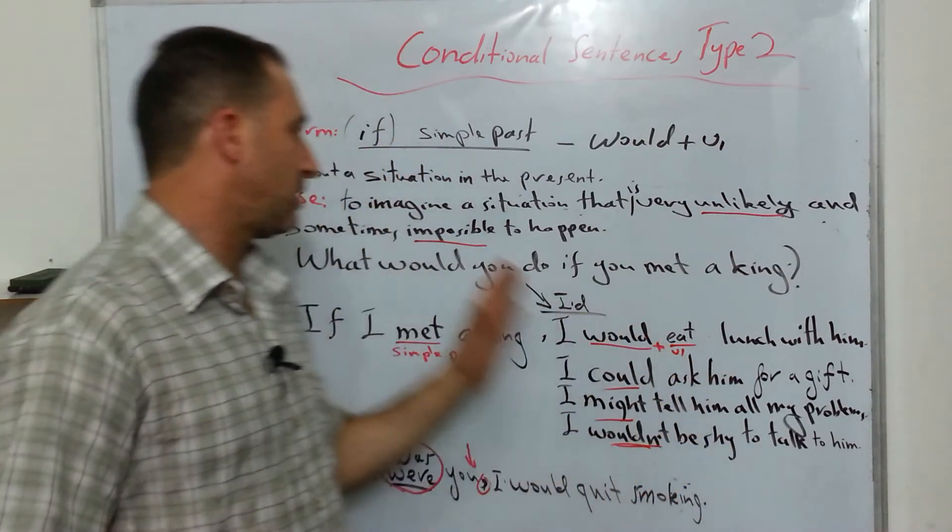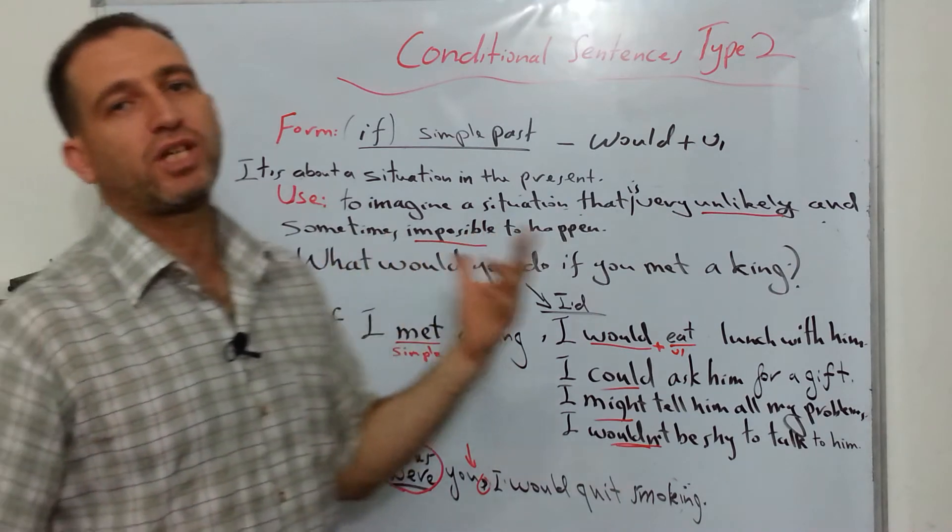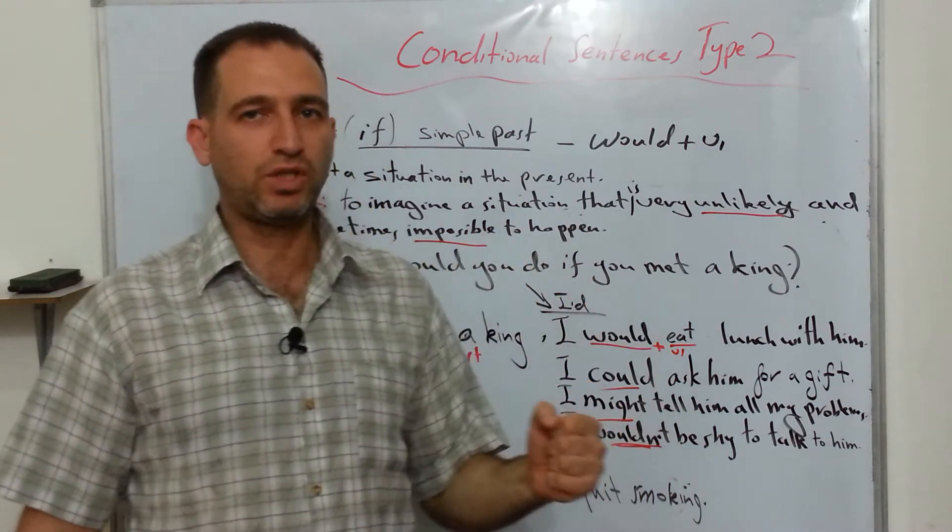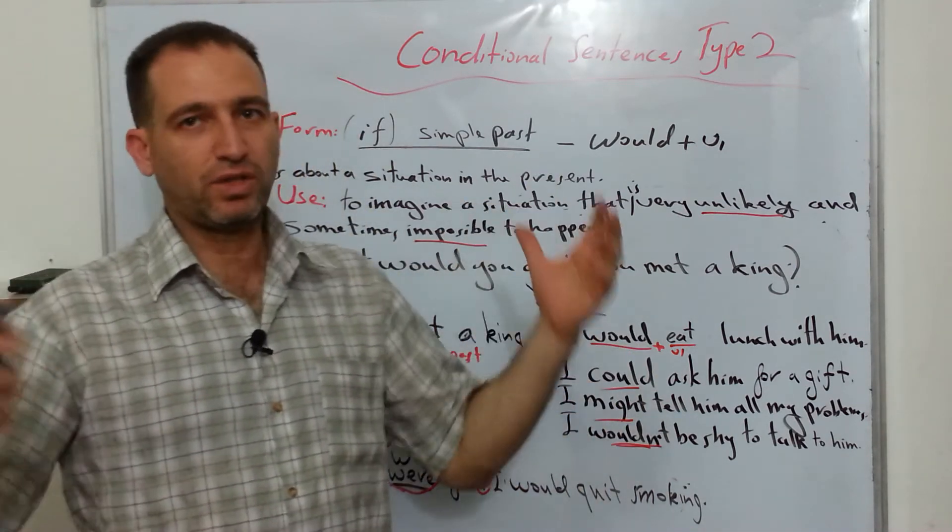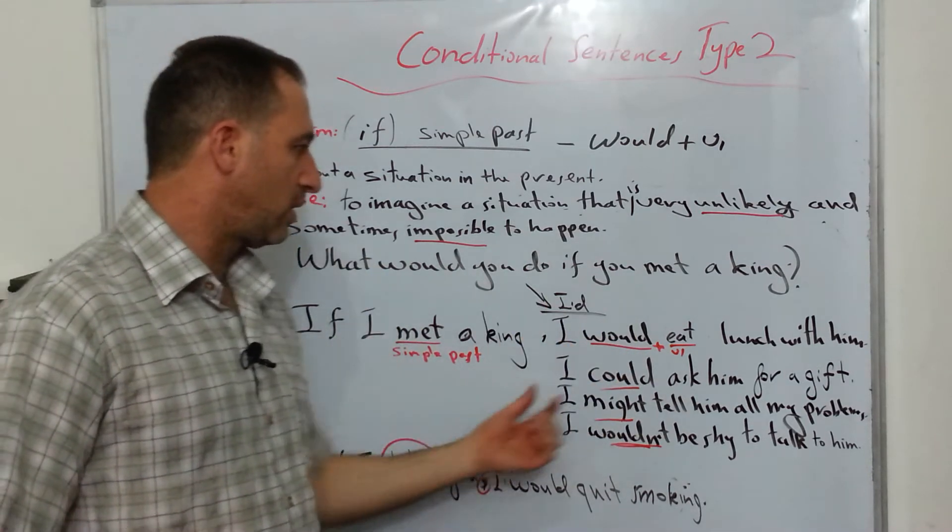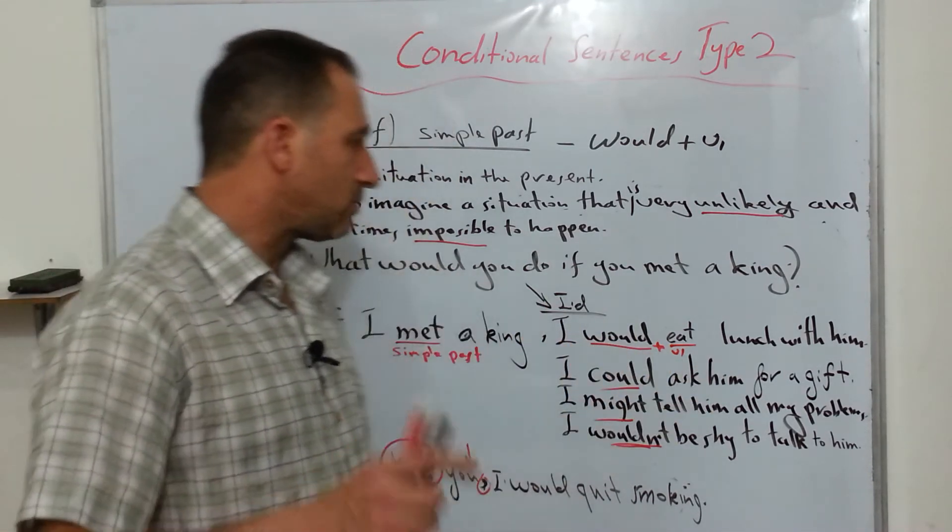And this is not about a past, it is a present situation, but I'm just imagining. And this is how we distinguish it, being imaginary, because I'm using this stuff. Verb 2 here, would plus verb 1.